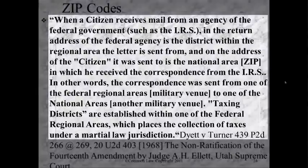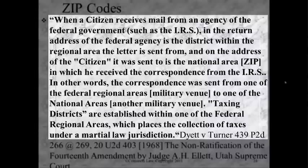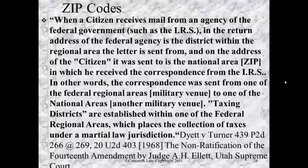The problem Congress realized was that while Congress could restructure the government agencies into these federal regional areas, the people could not be identified to be within this military venue but by their own consent — it's all by consent. The solution was to create another military venue which would trick the people to voluntarily accept recognition that they are within a military venue. Congress solved this problem by creating the zip code. The zip code divides the United States into 10 military venues called national areas. That's exactly why you never get a letter from the IRS from anywhere in the state you're in — they've got to get you into interstate commerce.